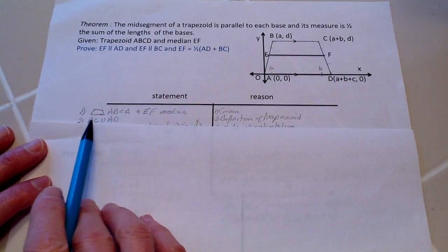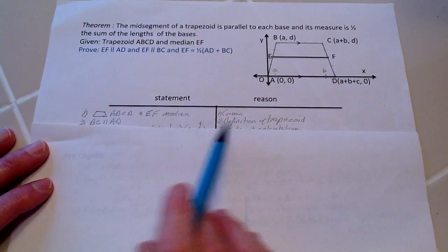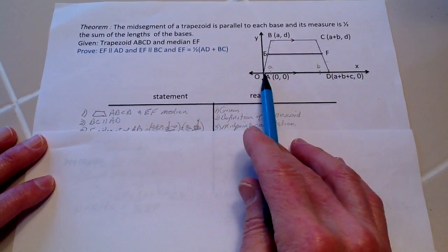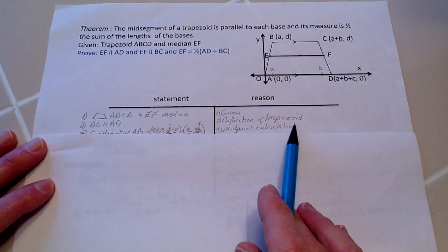First we go ahead and repeat what we were given about the trapezoid. And we know that this line, BC, is parallel to AD because that's part of the definition of a trapezoid.